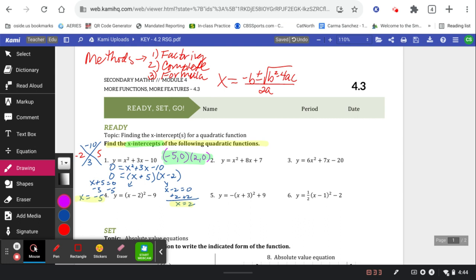Pause the video, try number two, is it factorable? All right, let's see how you did. This time we're trying to get 7 that adds up to 8. You got it. There were two factors, 1 and 7. So 0 is equal to x plus 1 and x plus 7 factors. Solve each piece by the zero product property.